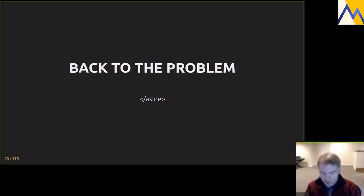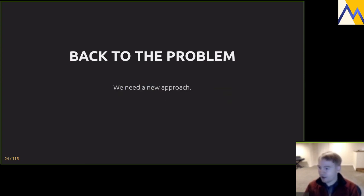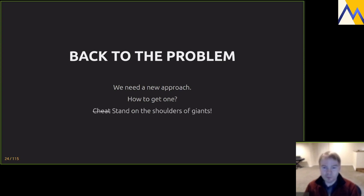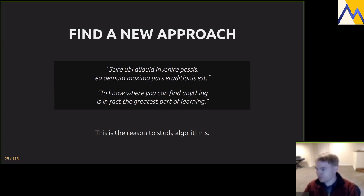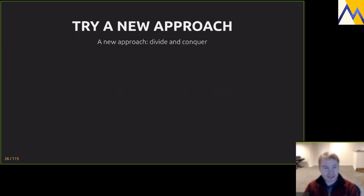Back to the problem — we need a new approach. We're allowed to build on the work of colleagues and predecessors; there are thousands of algorithms out there, you just need to know how to look for them. Being good at algorithms doesn't mean coming up with optimal solutions from scratch — the thing to do is look in the literature and stand on the shoulders of giants. The new approach: divide and conquer.